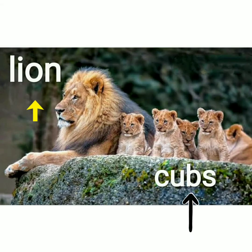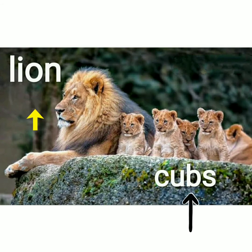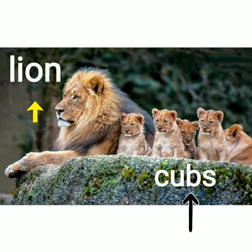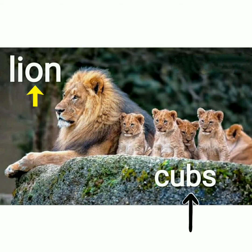The next one is lion and cub. L-I-O-N, lion. C-U-B, cub. Yahaan peh bohut saare hai, isi liye hamne ismeh cubs likha hai.